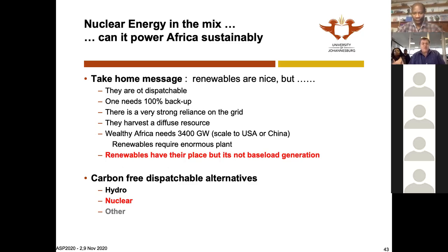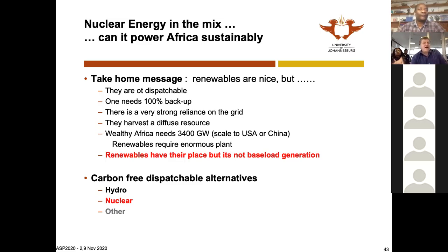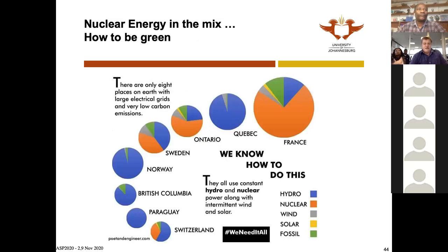We are not talking of an impoverished third-world Africa — we're talking of wealthy Africa. If we do wealthy Africa, we want 3,400 gigawatts, three terawatts, produced there. Renewables harvest a diffuse resource; to put down three terawatts of renewables you are really talking of enormous plant. Renewables have their place, but it's not baseload.